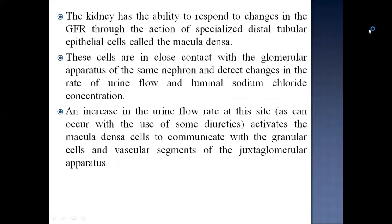The kidney can respond to changes in GFR through specialized distal tubular epithelial cells called the macula densa. These cells are in close contact with the glomerular apparatus of the same nephron and detect changes in urine flow rate and luminal sodium chloride concentration. An increase in urine flow rate — as can occur with some diuretics — activates macula densa cells to communicate with granular cells and vascular segments of the juxtaglomerular apparatus.